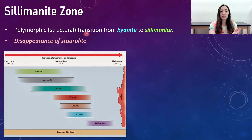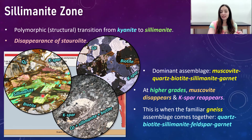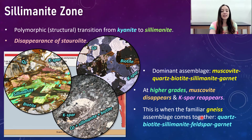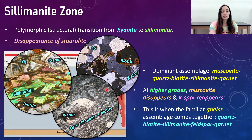The sillimanite zone, marking the transition of kyanite to sillimanite, also marks the disappearance of staurolite. The common assemblage in this zone is muscovite, quartz, biotite, sillimanite, and garnet. At higher grades still, muscovite disappears and K-spar reappears at the highest grades of the amphibolite facies, giving the familiar gneiss assemblage: quartz, biotite, sillimanite, K-spar, and garnet — a gneiss that forms from really high-grade metamorphism of pelitic protoliths rather than from the metamorphism of granite.